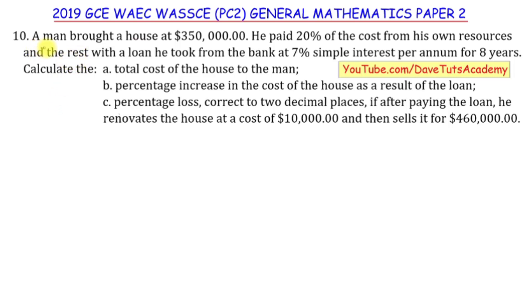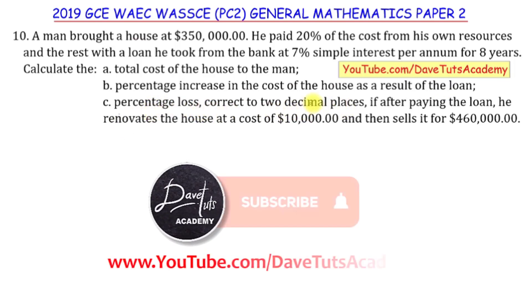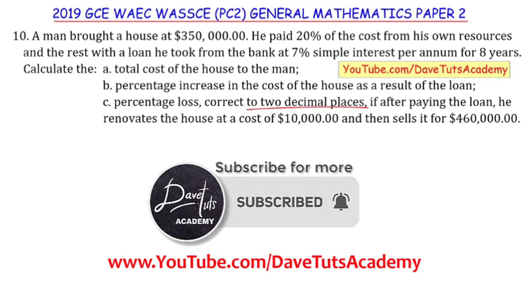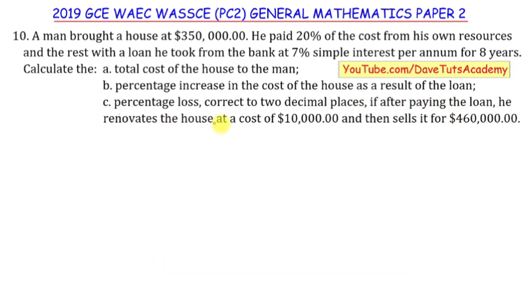This is a question on commercial mathematics in which we are told that a man bought a house at $350,000 and he paid 20% of the cost from his own resources and the rest he paid with a loan from the bank at 7% simple interest per annum for 8 years. Our mandate is to calculate: (A) the total cost of the house to the man, (B) the percentage increase in the cost of the house as a result of the loan, and (C) the percentage loss correct to 2 decimal places if after paying the loan he renovates the house at a cost of $10,000 and then sells it for $460,000. This is a classical question on commercial mathematics covering profit and loss, percent profit, percent loss, and simple interest.